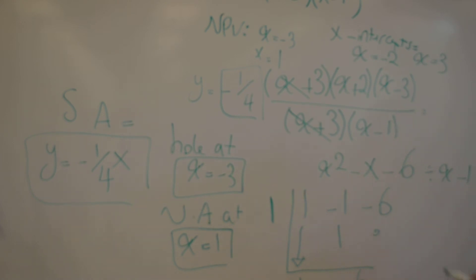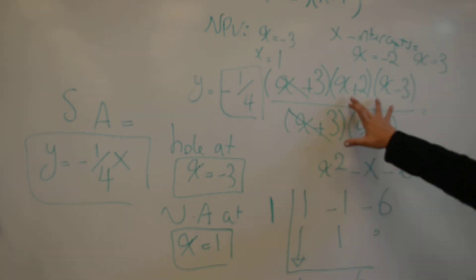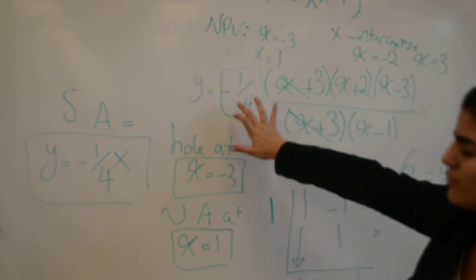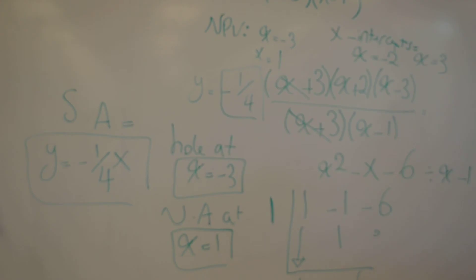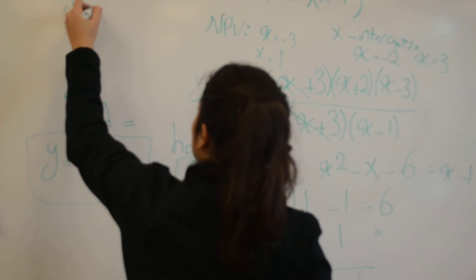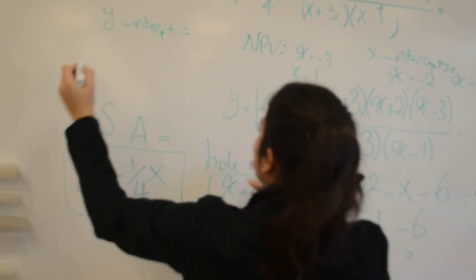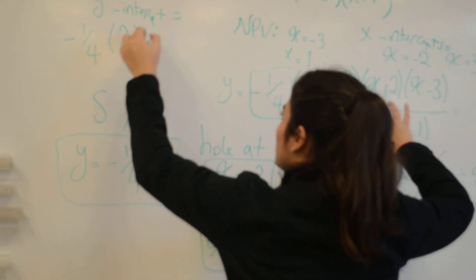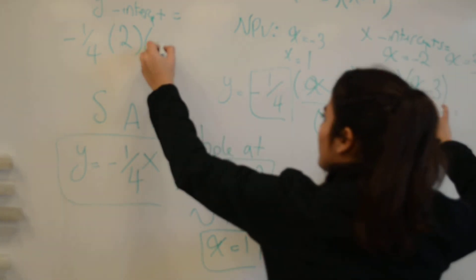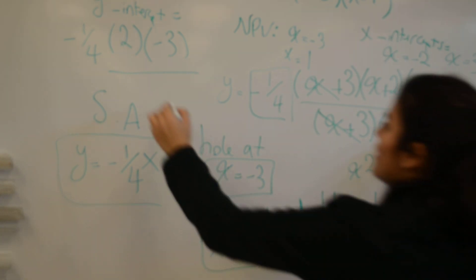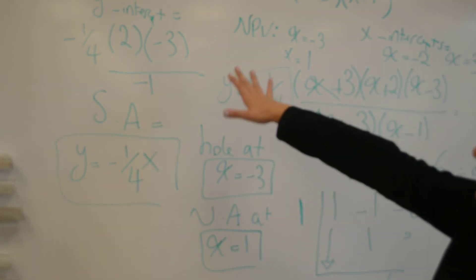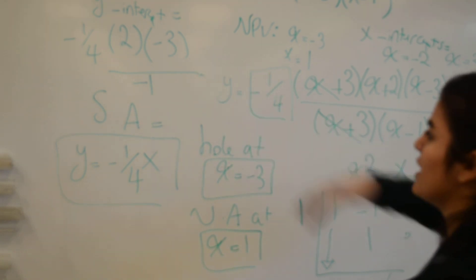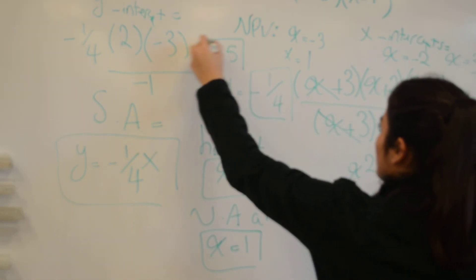For our y-intercept, we substitute 0 for all x values. The negative 1 over 4 will also affect our y-intercept. So we have negative 1 over 4 times, substituting 0 gives us 2, then negative 3, over substituting 0 gives us negative 1. Negative 3 times 2 is 6 over negative 1, times negative 1 over 4, which gives us negative 1.5. That is our y-intercept.